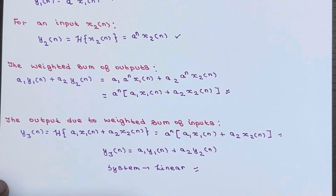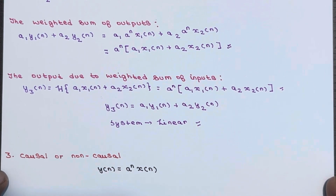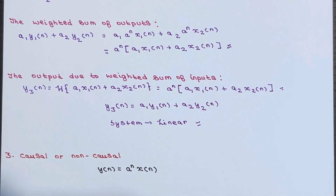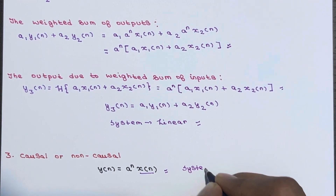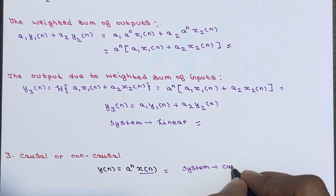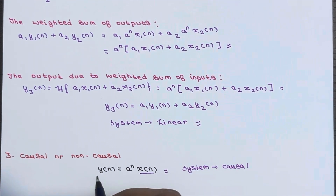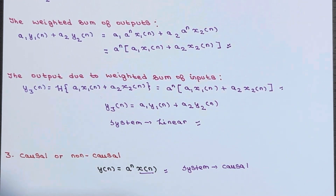Now let's check causality. We can see y(n) = a^n · x(n). The output depends only on the present values of input — it does not depend on future values. Hence the system is causal.